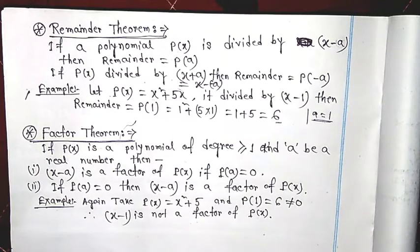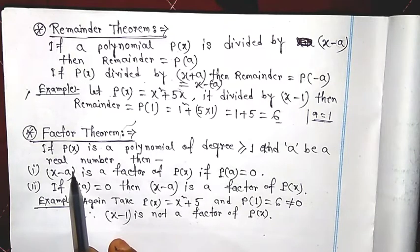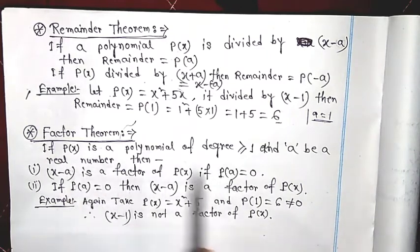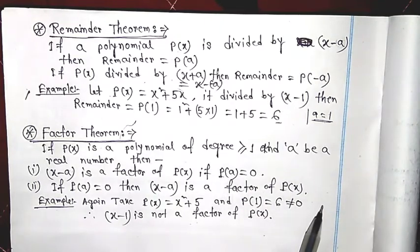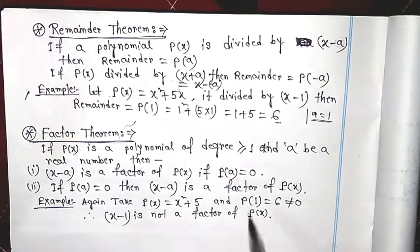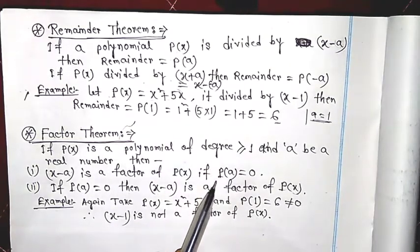This theorem works both ways: if (x − a) is a factor of p(x), then p(a) = 0; and conversely, if p(a) = 0, then (x − a) is a factor of p(x). So it is an if-and-only-if condition. This is a corollary of the Remainder Theorem.